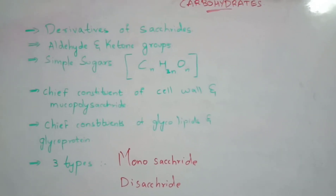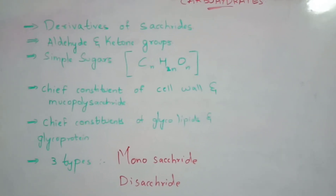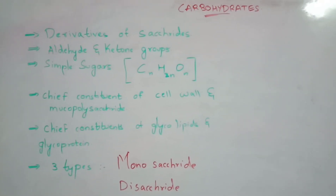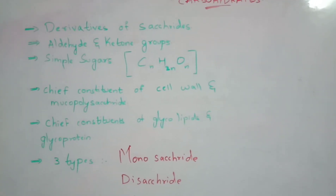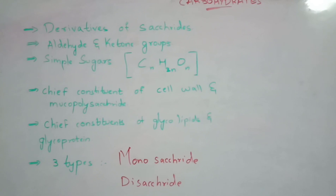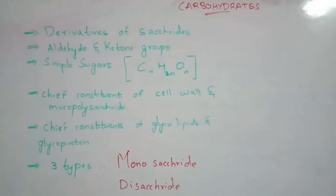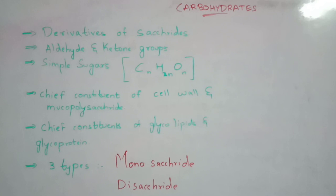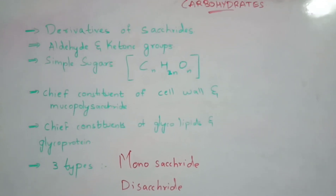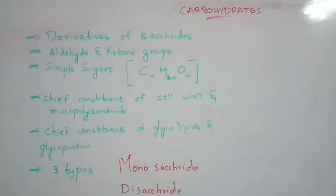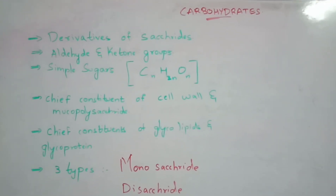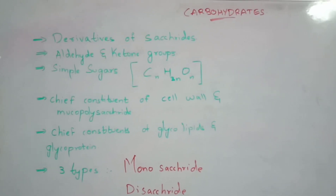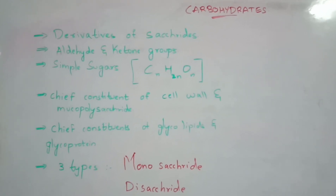The chemical formula of carbohydrates is CₙH₂ₙOₙ, or it can also be written as Cₙ(H₂O)ₙ. Coming to the fourth point, carbohydrates are the chief constituents of cell walls and mucopolysaccharides — if you see the cell wall of any eukaryote or prokaryote, the carbohydrate content will be high.